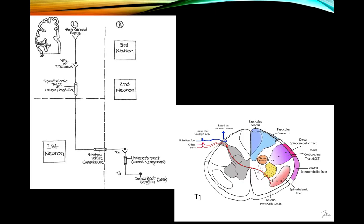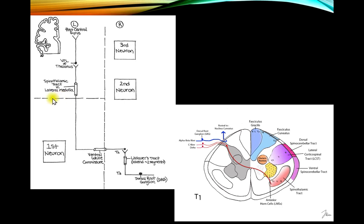The spinothalamic tract carries pain and temperature fibers. These come in, synapse, and cross over in the ventral white commissure — a crossing pathway in the spinal cord — and then ascend as the spinothalamic tract. At T3, for example, the fibers come in, ascend for a few segments in a small tract called Lissauer's tract, then synapse and cross in the ventral white commissure.